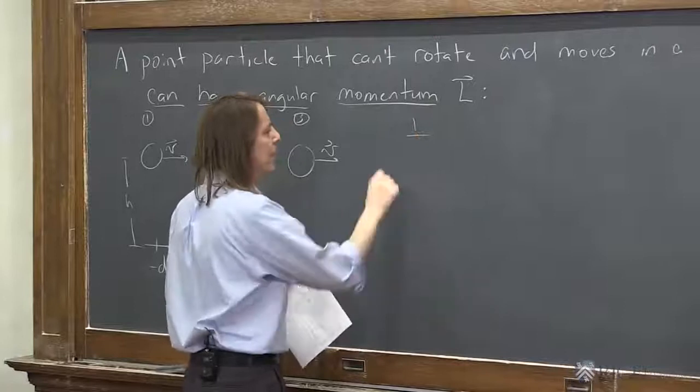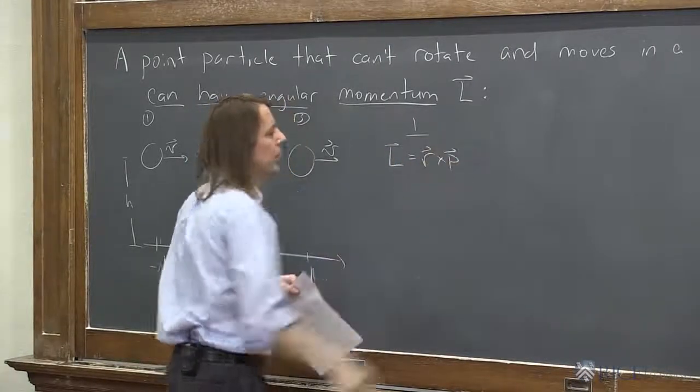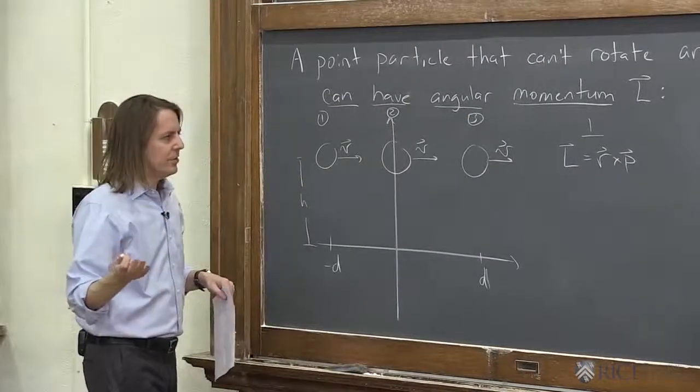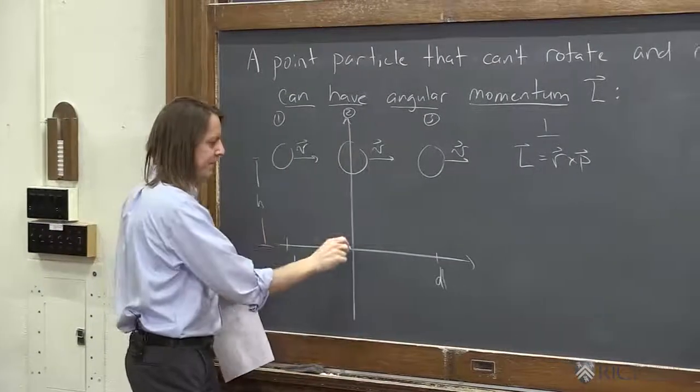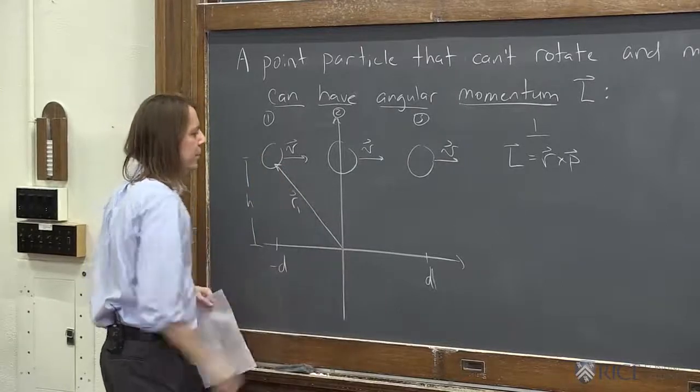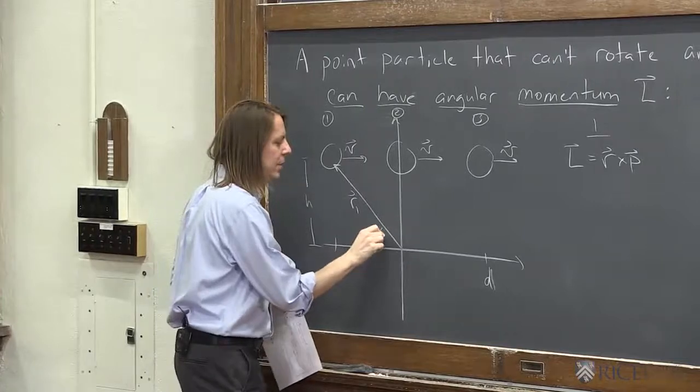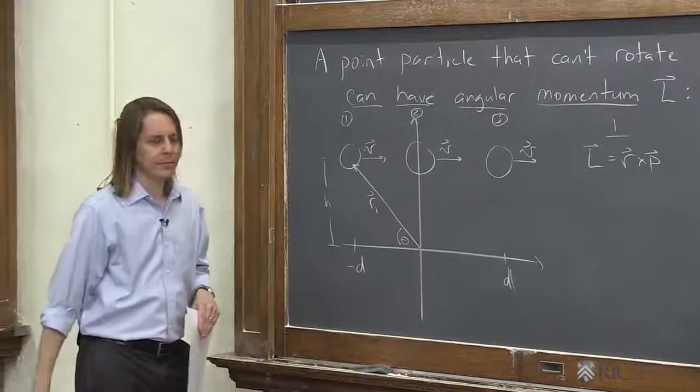Position one, L. We said it's R cross P. So we've got to get those vectors. So R is just the position vector. Go from the origin to where it sits. There's R1. For this problem, I'd recommend putting an angle there. There's theta.